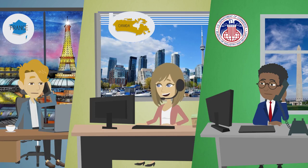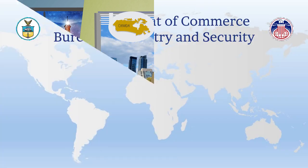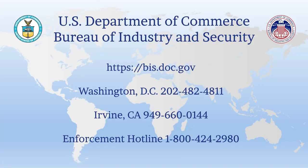François exclaims: Merci, BIS! I feel much more comfortable with re-export controls now. The counselor responds: You're welcome, François. As always, BIS's Office of Exporter Services is here to help. Please feel free to contact us if you have any further questions. Thank you for watching this video and happy re-exporting! The final screen shows U.S. Department of Commerce, Bureau of Industry and Security, with contact numbers: Washington D.C. 202-482-4811, Irvine CA 949-660-0144, and Enforcement Hotline 1-800-424-2980.